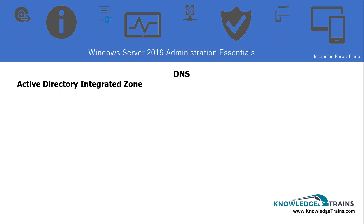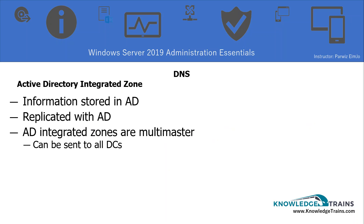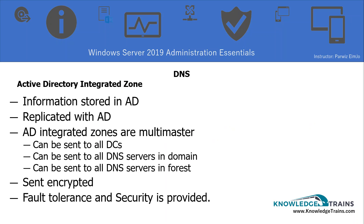When it comes to DNS, there is another zone called Active Directory Integrated Zone, where all the information for your DNS is stored in Active Directory. It is replicated with Active Directory, and Active Directory Zones are multi-master, meaning changes can be sent to all domain controllers — not just local. The DNS settings will be sent to other domain controllers, even to DNS servers in other domains and the forest, in an encrypted way for security. Fault tolerance is also provided, meaning if the DNS server is no longer functioning, you have another DNS working for you.